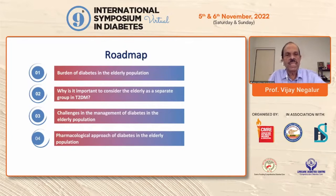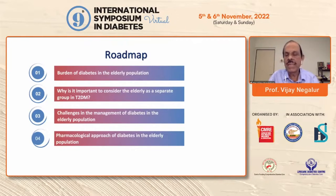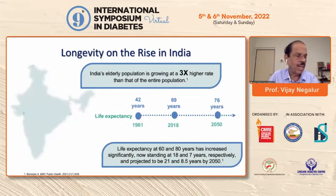The roadmap of today's discussion is to cover the burden of diabetes in the elderly population, why it's important to know about it, the challenges in management, and the pharmaceutical approach that we require.